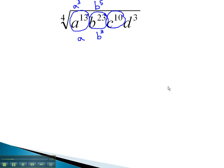Similarly, on c to the 10th, dividing that exponent by 4, we have c squared coming out with a remainder of 2 left behind. The d to the 3rd, when we divide that exponent by 4, we get 0 with a remainder of 3. This means none come out of the radical.